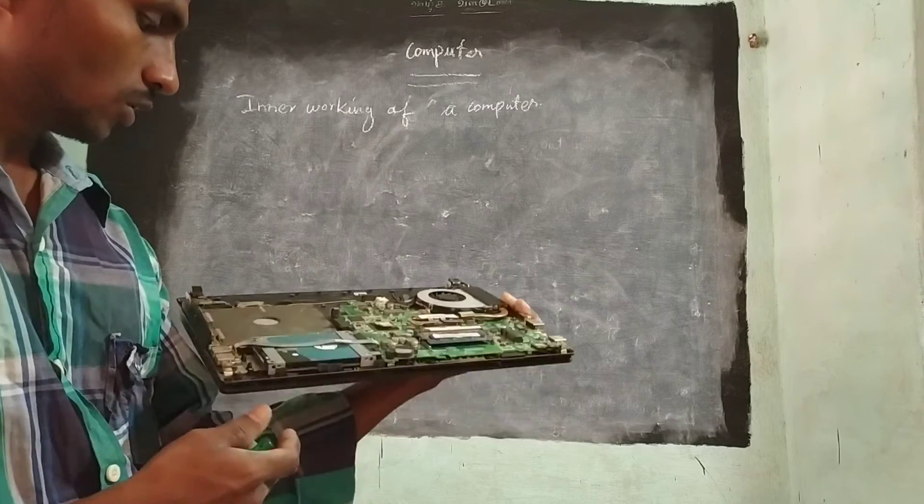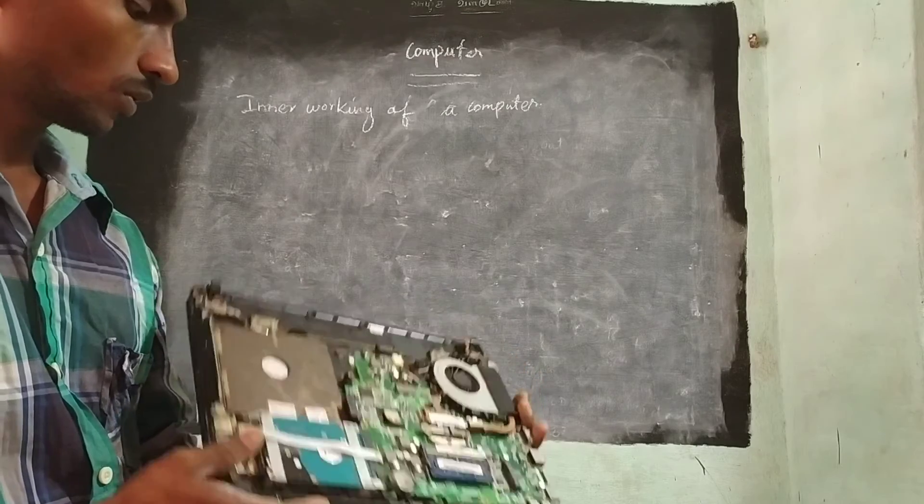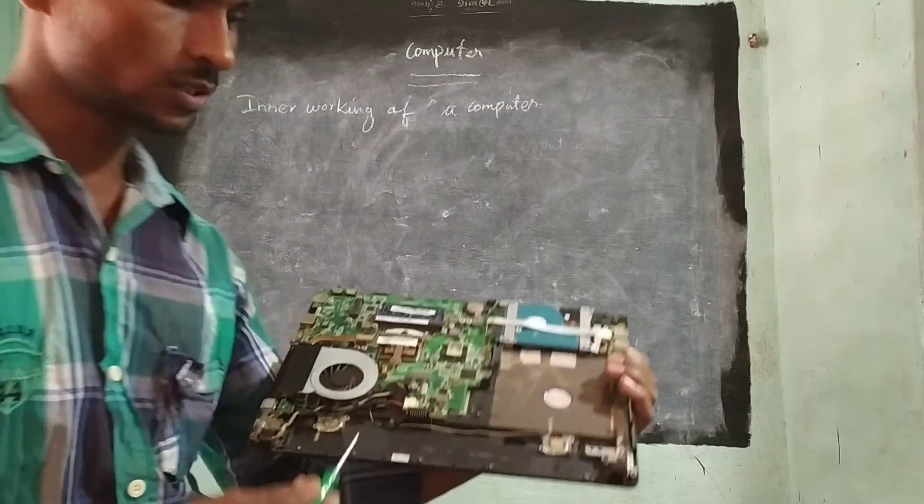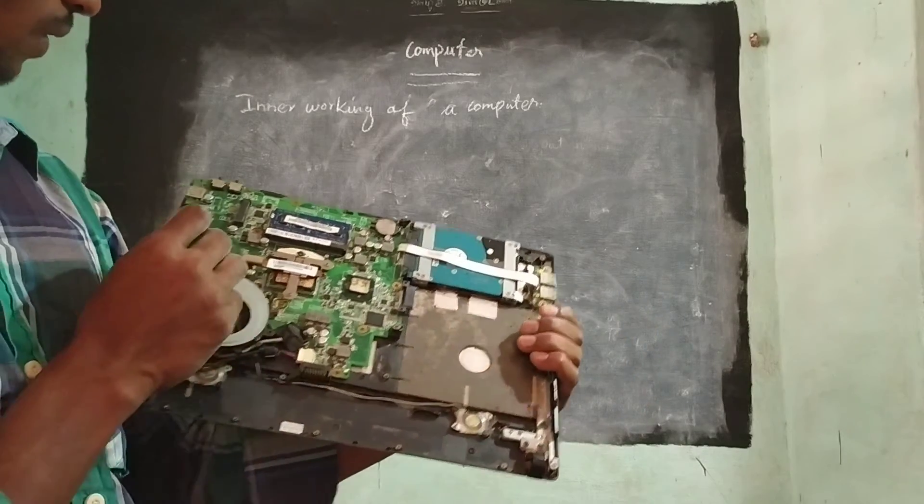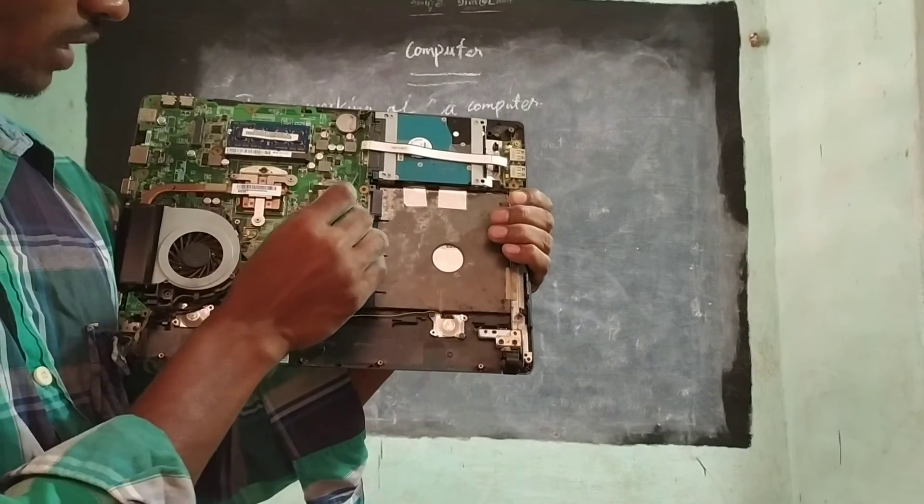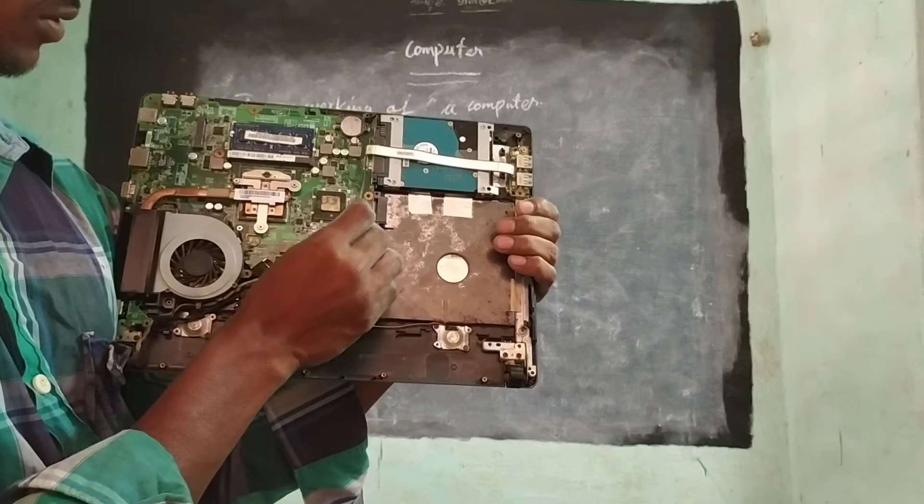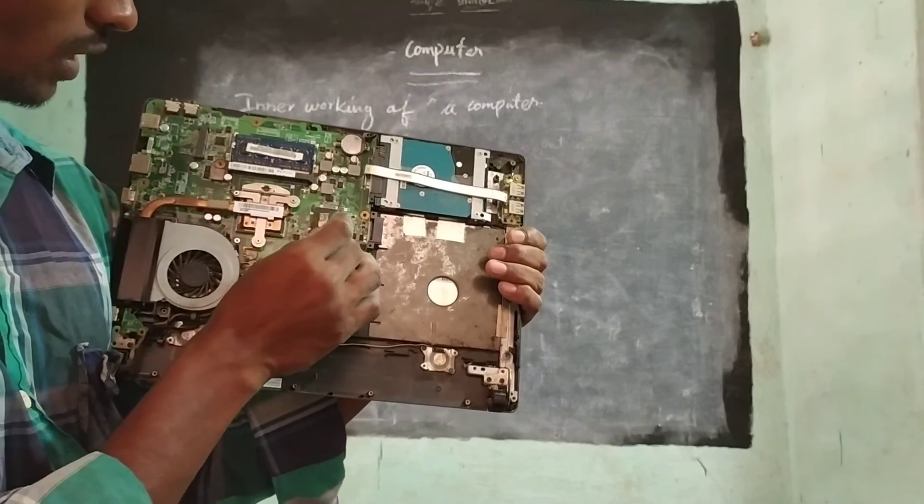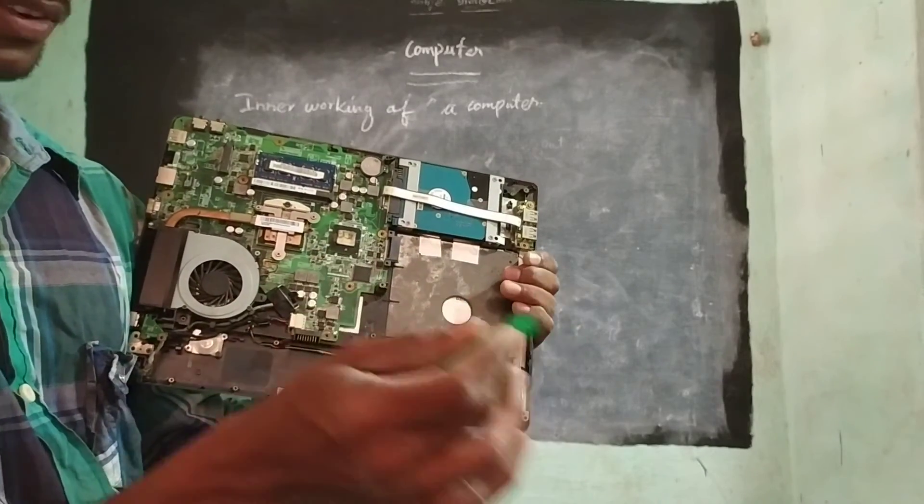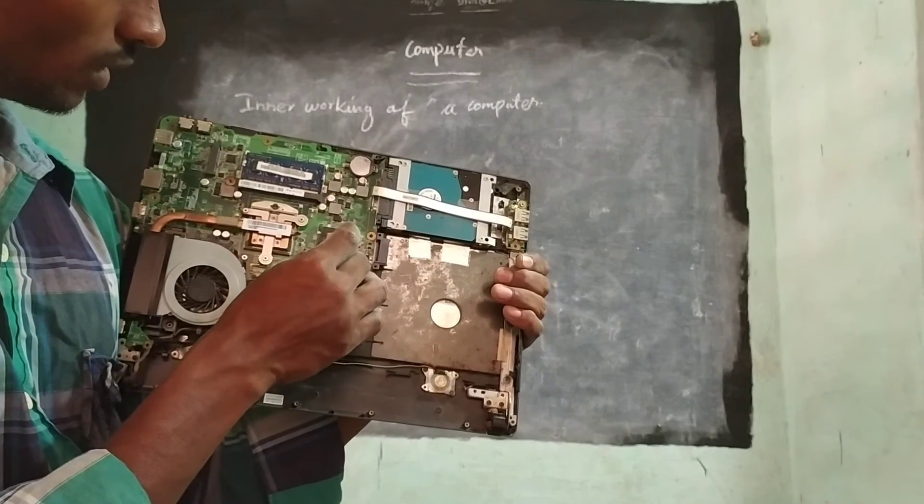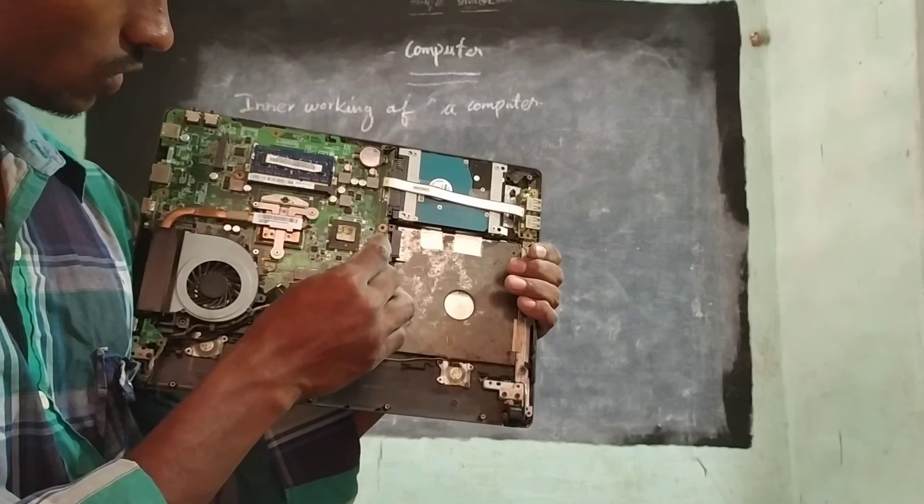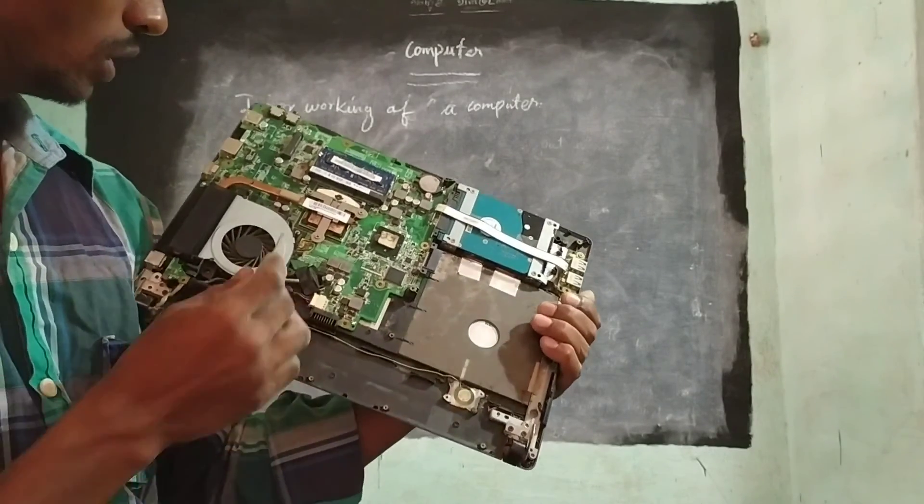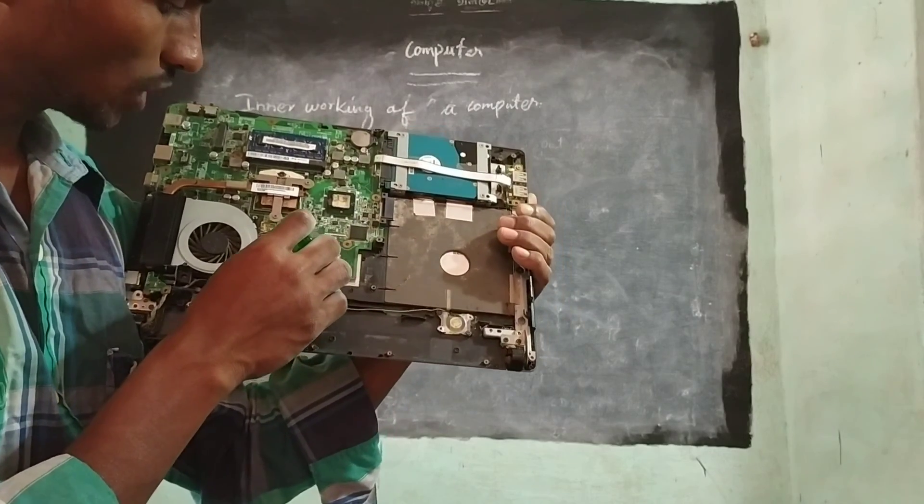CPU. It will works like this only. So through the cables I have set the buses now. Just look. Within this so many lines will be gone. So this and all called as a bus. So through these lines only without any cables, each and everything is connected through these buses only. Here just look, these are the things. So each and every process is mentioned here.